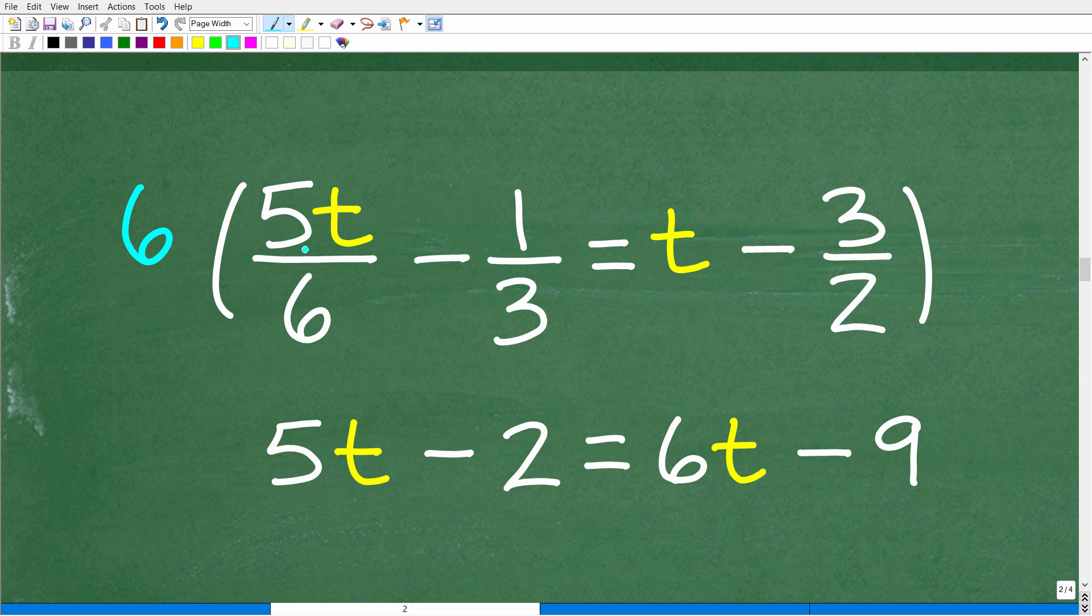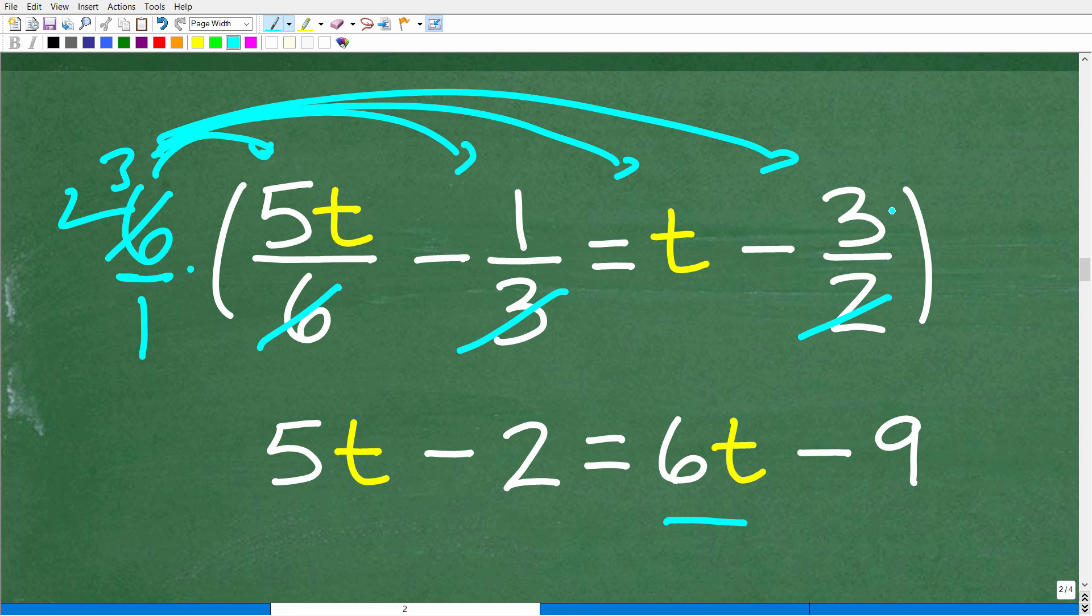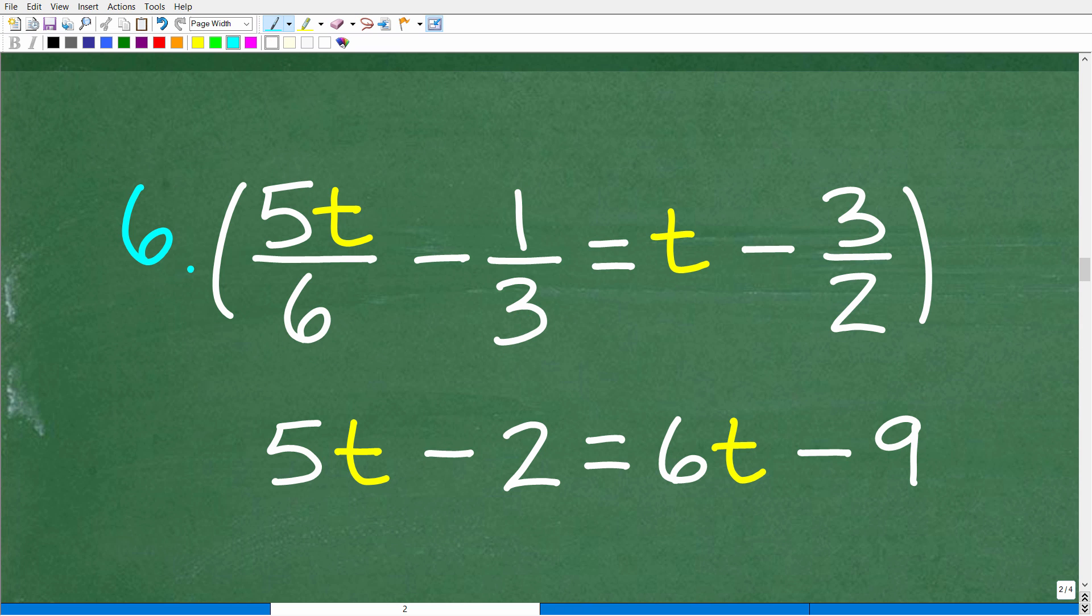You need to be very careful when you do this, and you have to really understand the distributive property. Here we're going to take six times five over six times t. The sixes would cross cancel, and I'm left with five t. So five t is the answer when we multiply six times five over six t. Six times one-third, three goes into six, two. So two times one is two. Six times t is six t. And then six times three halves, two goes into six, three. Three times three is nine. So now we have this lovely linear equation and no fractions, so we're definitely happy about that.